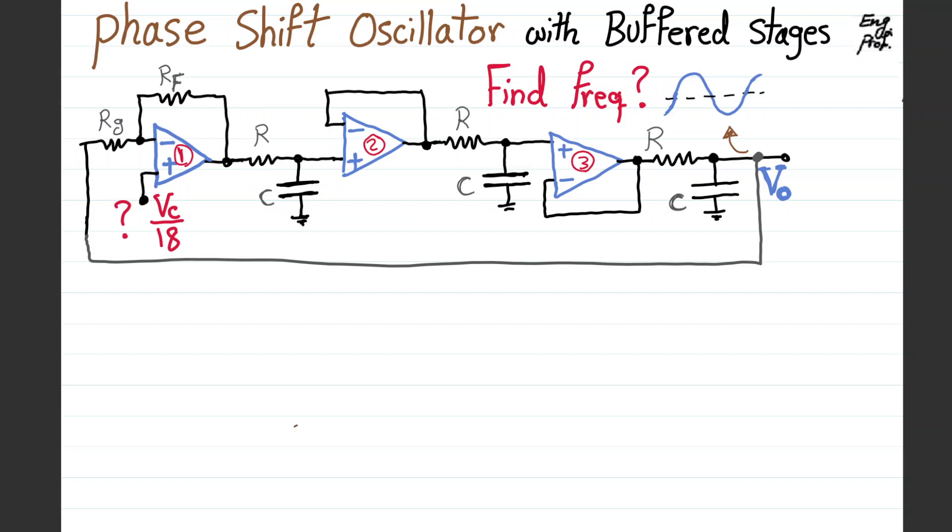A three-stage phase shift oscillator with buffer stages for practical reasons is shown here. The question is, can we design the circuit so that sinusoidal oscillation happens in a stable fashion at Vout, and what is the frequency there? Also, why do we need Vc over 18 at the positive input terminal of the first op-amp for proper DC bias, assuming we are using single supply design?